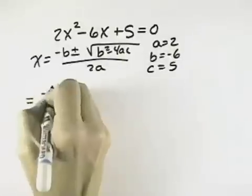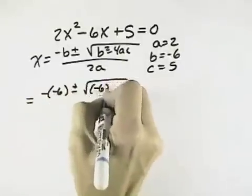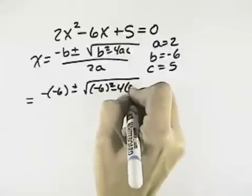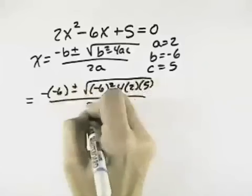So that means x will equal the opposite of negative 6 plus or minus the square root of negative 6 squared minus 4 times a, which is 2, times c, which is 5, all over 2 times 2.